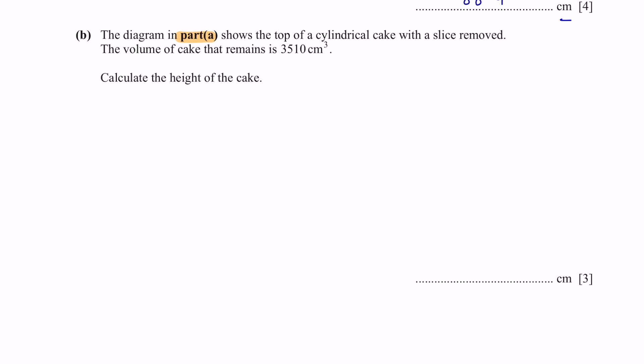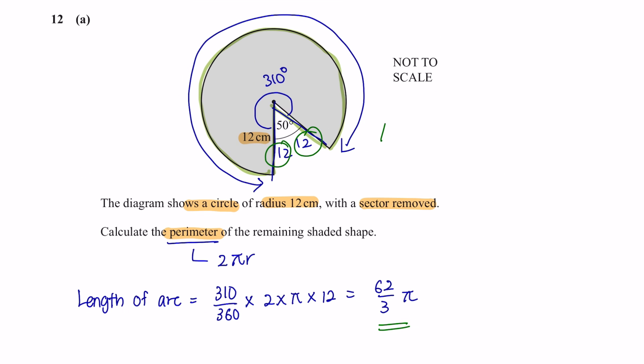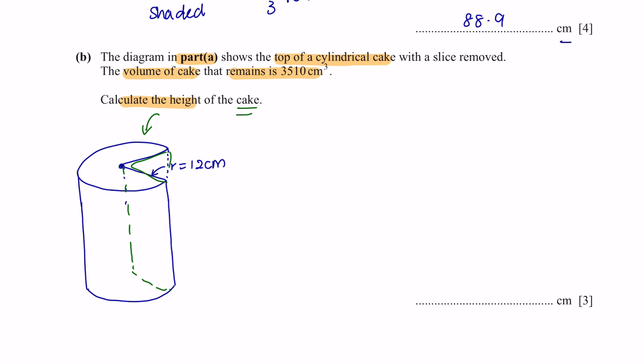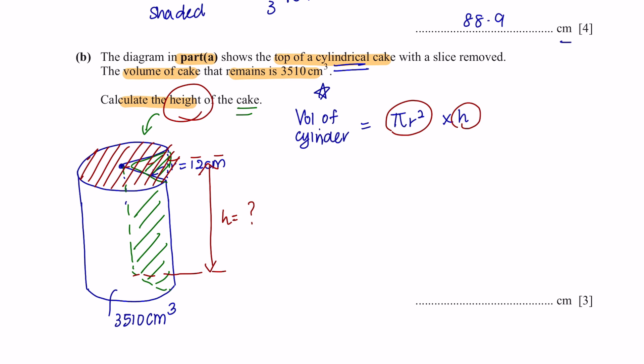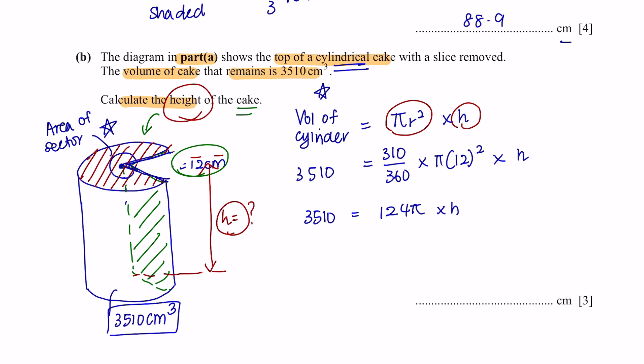Next, question B. The diagram in part A shows the top of a cylindrical cake with a slice removed. The volume of cake that remains is 3,510 cm³. Calculate the height of the cake. So what they're saying is, the shape shown here is the top part of a cake. And after removing a slice, the volume of the remaining cake is 3,510 cm³. And we're looking to find the height of the cake. Since this is the shape of a cylinder, we will look for the volume of a cylinder, which is πr², the area of a circle, times by the height. But since a slice has been removed, we're going to find only the area of the sector. That would be 310 over 360 times πr². And then multiply by h will give us this volume. We can substitute the value of r with the radius provided. And now let's simplify this. And rearranging this to find h, you will get 9.01 cm as the height.